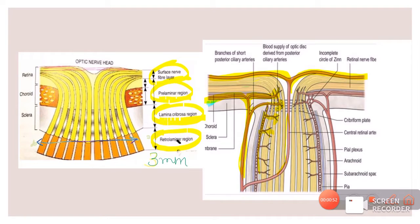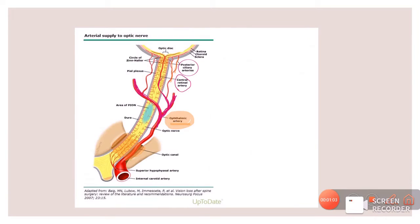Having knowledge about the blood supply of the optic nerve is very important — if you are not thorough about it, I suggest you visit my video on that topic. The retro-laminar and intra-orbital parts of the optic nerve are supplied mainly by the central retinal artery travelling within the substance of the nerve, along with the pial plexus — small arteries coming from the pia mater surrounding the optic nerve.